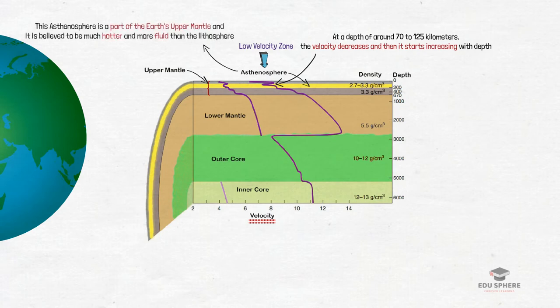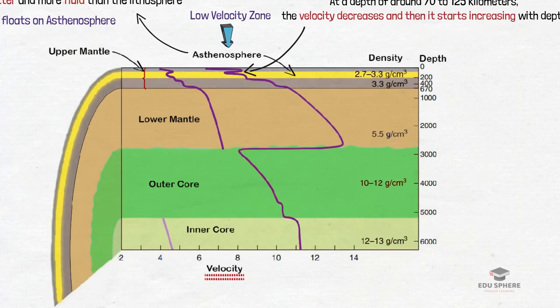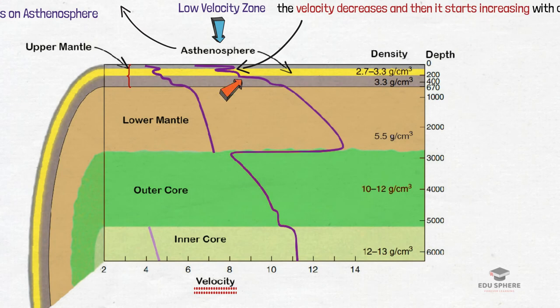This asthenosphere is the zone of the Earth's mantle lying beneath the lithosphere and it is believed to be much hotter and more fluid than the lithosphere. Since the lithosphere has a lower density, it floats on top of the asthenosphere similar to the way in which an iceberg or a block of wood floats on water. In the lower part of the asthenosphere that is about 300 to 700 kilometers depth, the velocity of the seismic waves gradually increases.